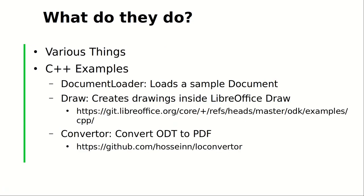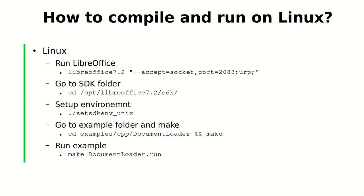What do they do? They do various things. Today I focus on C++ examples. Document Loader and Draw are LibreOffice C++ examples. You can find them inside sdk/examples/cpp in the source code, and they are also shipped with the LibreOffice binary SDK. Document Loader essentially loads a sample document. Draw creates circles and other drawings inside LibreOffice Draw. The last one, Converter, is something I've written — you can find it on my GitHub page. It essentially converts ODT or other file formats to PDF.